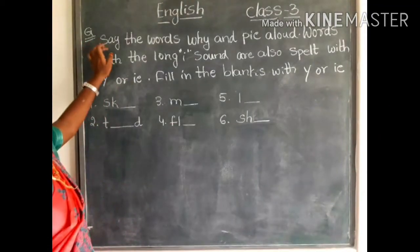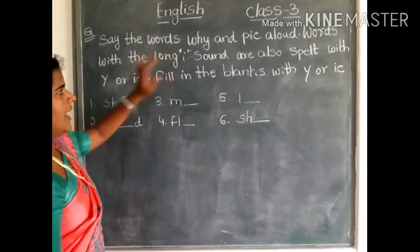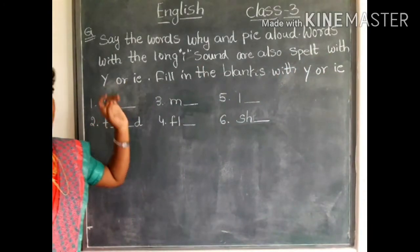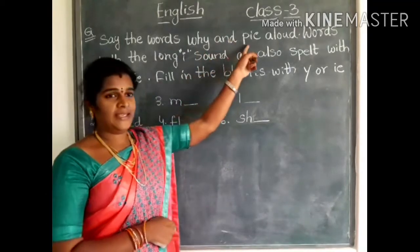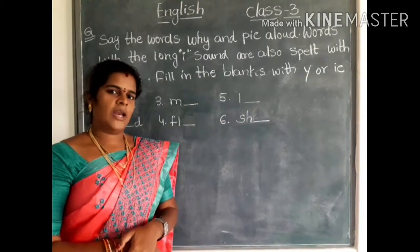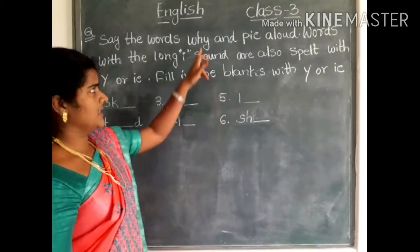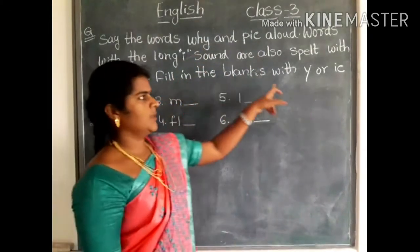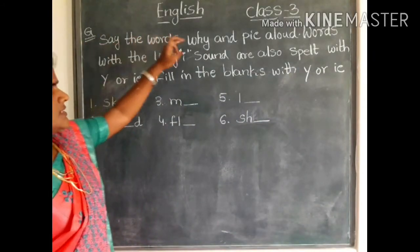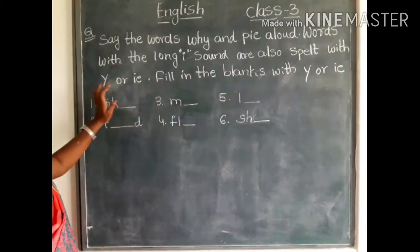Next, we have a phonics exercise on the train. Say the words 'Y' and 'pie' aloud. Words with the long I sound are also spelled with Y or IE. Here you see children, you spell like this — Y and ie — these two give the long I sound. When will you get the long I sound? By writing Y or IE, you will get the long I sound.